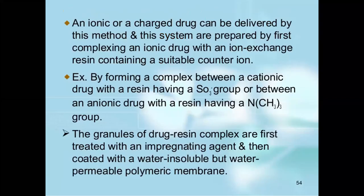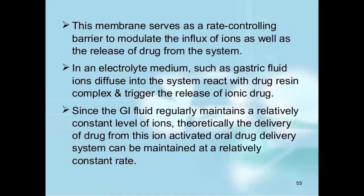Next is the ion-activated drug delivery system. An ionic or charged drug can be delivered by this method. These systems are prepared by first complexing an ionic drug with an ion exchange resin containing a suitable counter ion. For example, a complex can be formed between a cationic drug and a resin having an SO3 group, or between an anionic drug and a resin having a quaternary ammonium group. The granules of drug-resin complex are treated with an impregnating agent and then coated with a water-soluble but water-permeable polymer membrane. This membrane serves as a rate-controlling barrier to modulate the flux of ions as well as the release of the drug. In an electrolyte medium such as gastric fluid, ions diffuse into the system, react with the drug-resin complex, and trigger the release of ionic drug. Since GI fluid regularly maintains a relatively constant level of ions, theoretically the delivery of drug from this ion-activated oral drug delivery system can be maintained at a relatively constant rate.